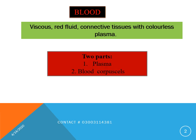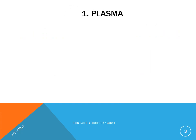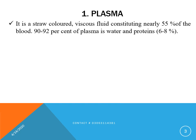Blood consists of two parts. One is plasma, which is non-living, and the other are the blood corpuscles, which are living. Plasma is non-living and it forms almost 55% of blood. 90 to 92% of plasma is water and the remaining is protein and other inorganic and organic substances. Protein is about 6 to 8%.